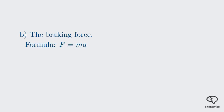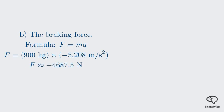We know the mass of the car is 900 kilograms, and we just calculated the acceleration as negative 5.208 meters per second squared. Let's multiply them. The result is approximately negative 4687.5 Newtons. The negative sign here means the force is acting in the opposite direction of the car's motion, which makes sense for a braking force. The question asks for the braking force, which is the magnitude. Therefore, the braking force is 4687.5 Newtons, or rounded to one decimal place, 4.7 kilonewtons.